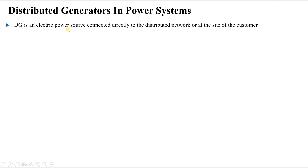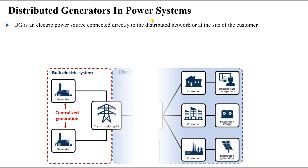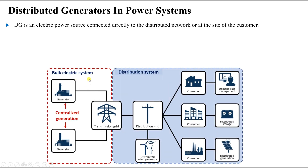Hence the name distributed generators — it is called DG because it is connected only to the distribution network. If it is connected to a transmission network, then in that case it is not a distributed generator.